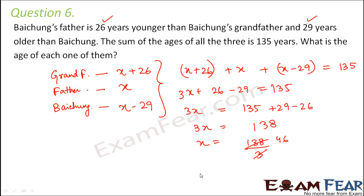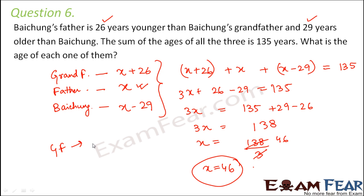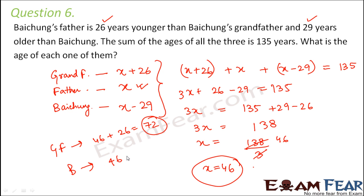So x equals 138 divided by 3, which equals 46. That means Bijuse's father's age is 46 years. Therefore the grandfather's age is 46 plus 26 which equals 72 years, and Bijuse's age is 46 minus 29 which equals 17. So Bijuse is 17 years old, his father is 46, and his grandfather is 72 years old.